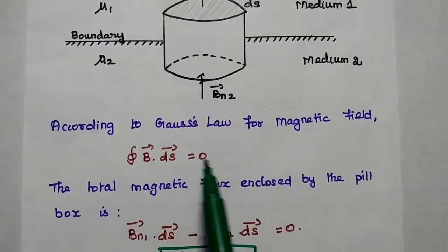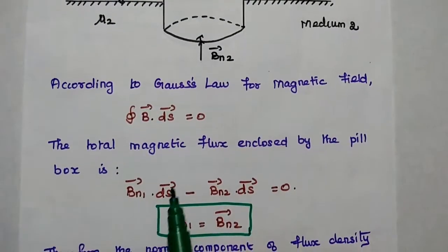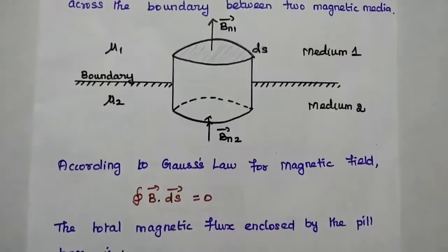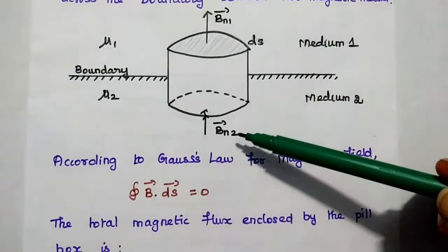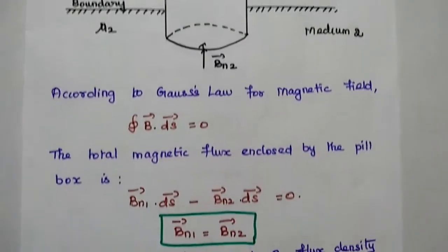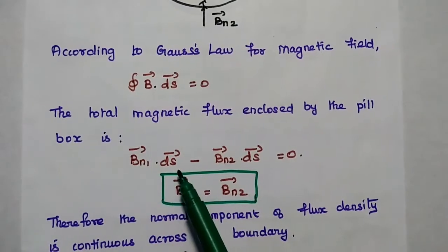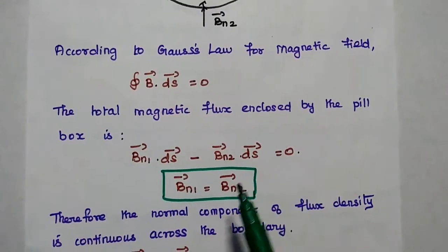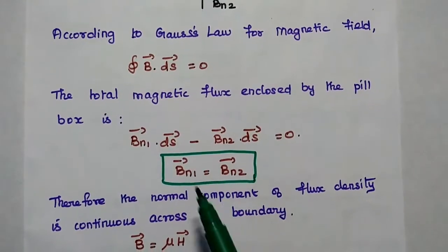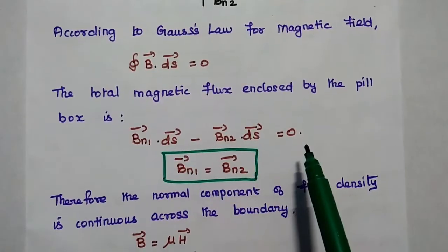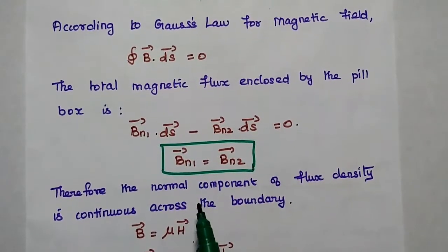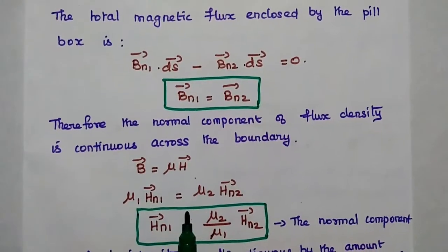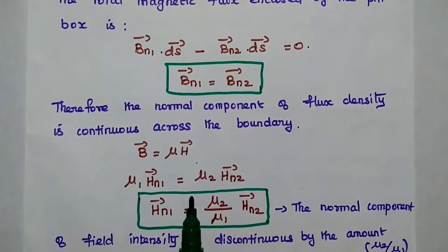According to Gauss's law for magnetic field, the total magnetic flux passing through any closed surface is equal to 0, so the integration of B dot DS is equal to 0. We take the total magnetic flux enclosed by the pillbox. We have two magnetic flux densities BN1 and BN2, so: BN1 dot DS minus BN2 dot DS is equal to 0. Cancelling DS and rearranging, we get BN1 is equal to BN2. Therefore, the normal component of magnetic flux density is continuous across the boundary line.